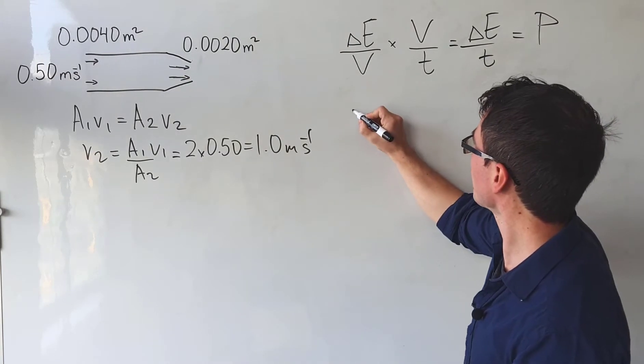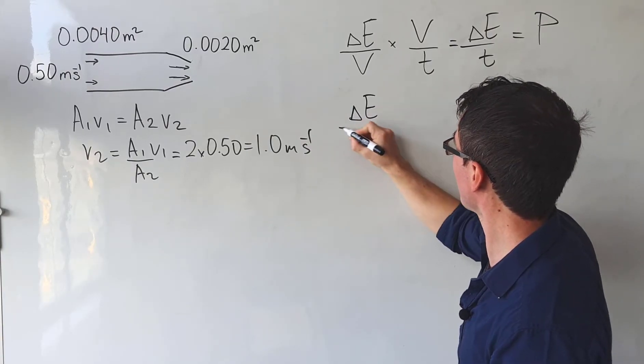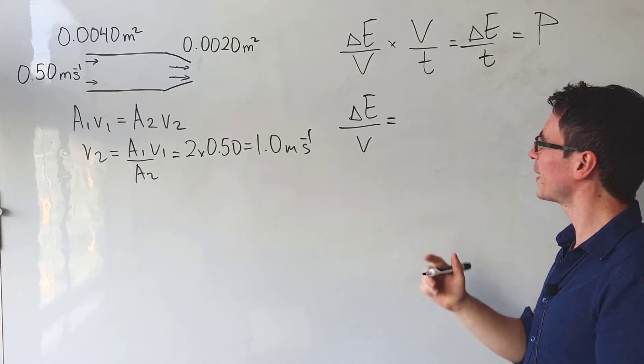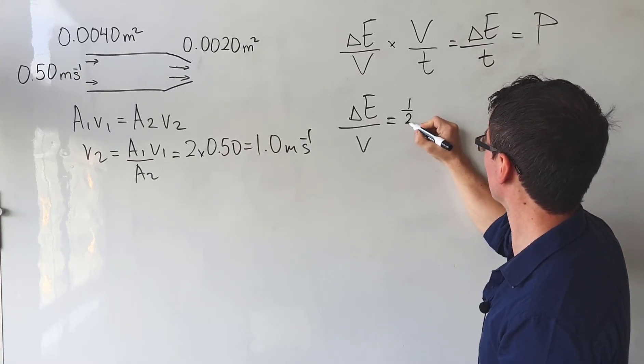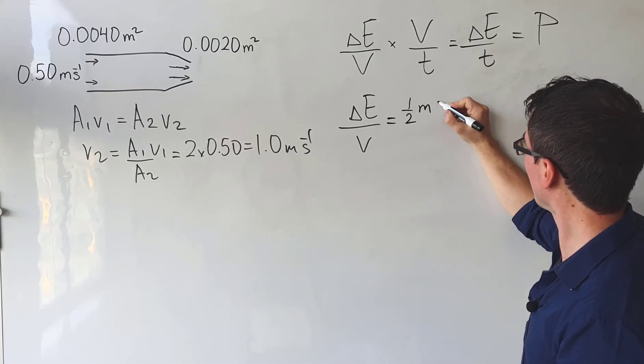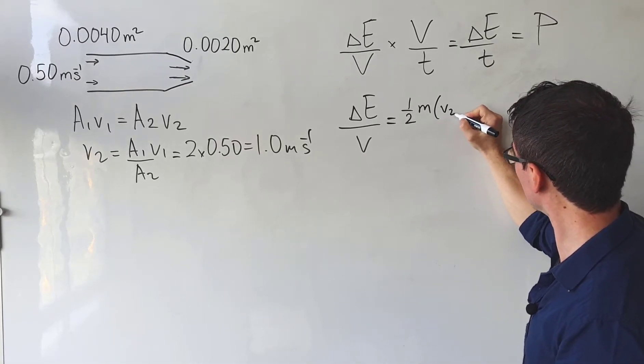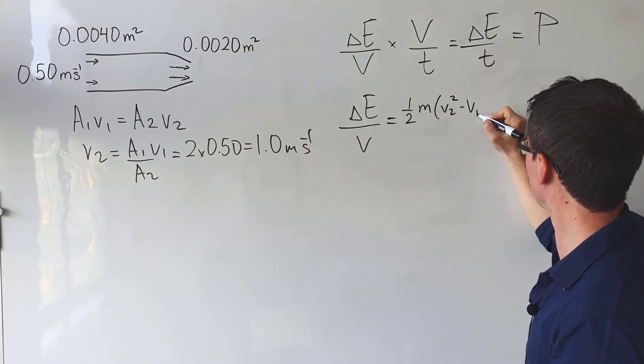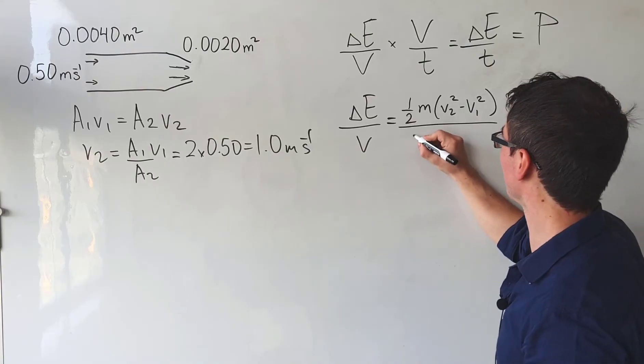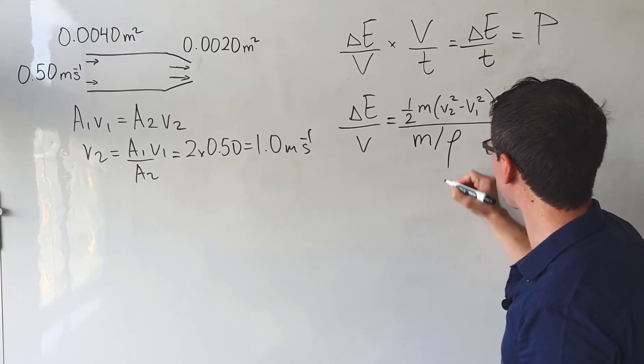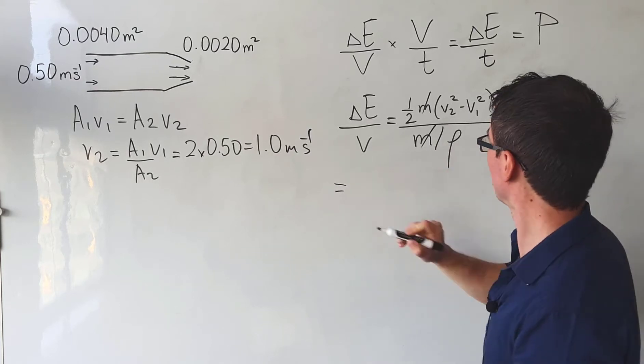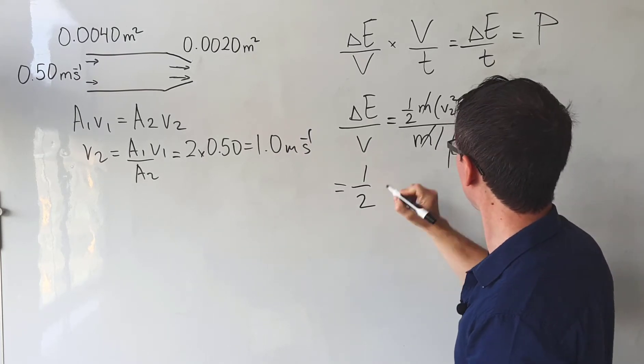Let's start with the first term, which is the change of energy divided by the volume. The change of energy of this fluid is purely kinetic, so this will be equal to a half times the mass multiplied by V2 squared minus V1 squared, divided by the volume, which is simply the mass divided by the density.